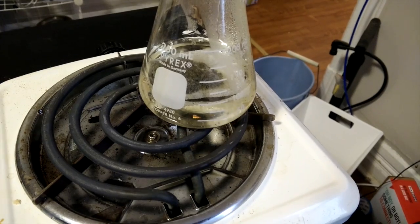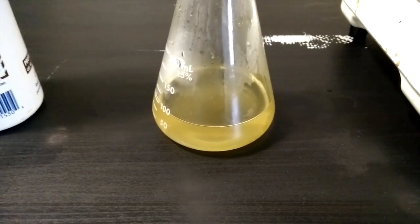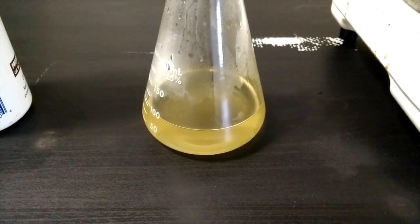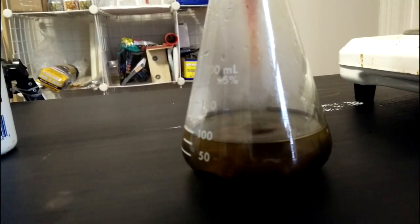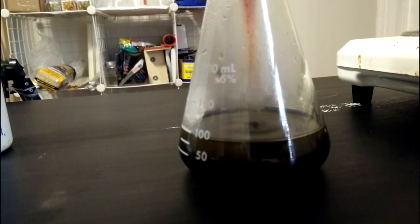Here I'm using deionized water in an Erlenmeyer flask but a jar and tap water will work fine. In this example I'm using a hundred mils of tea and three mils of iron chloride but feel free to play with the concentrations.